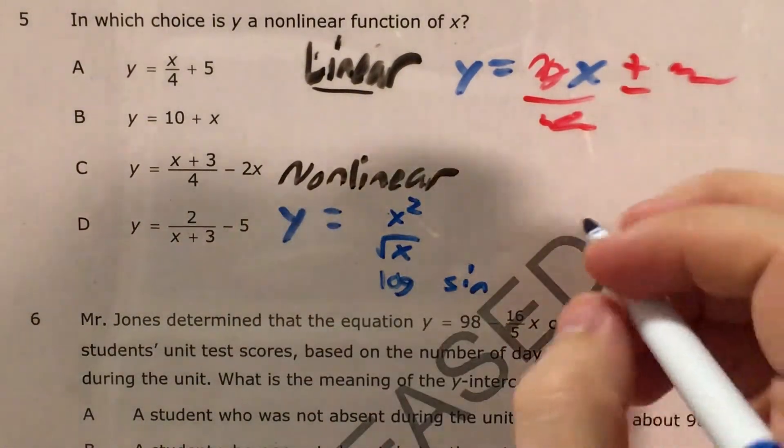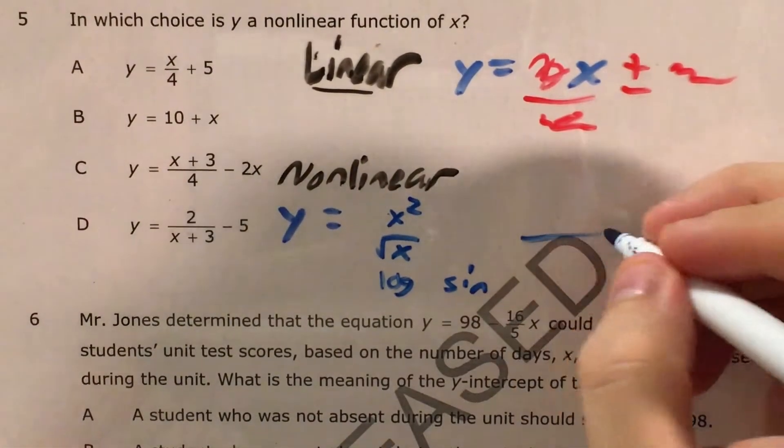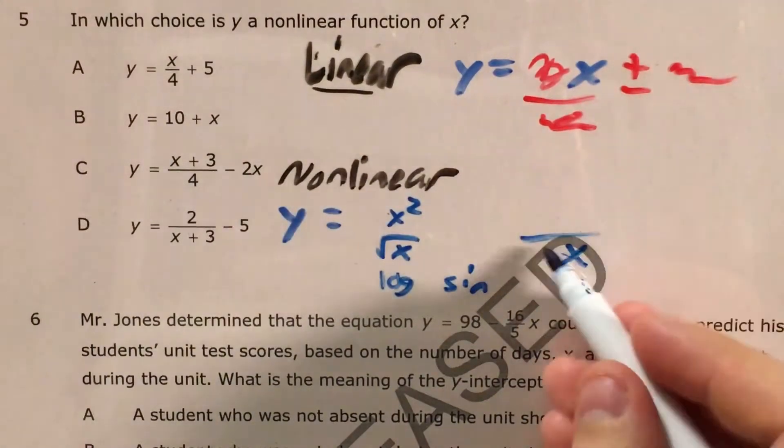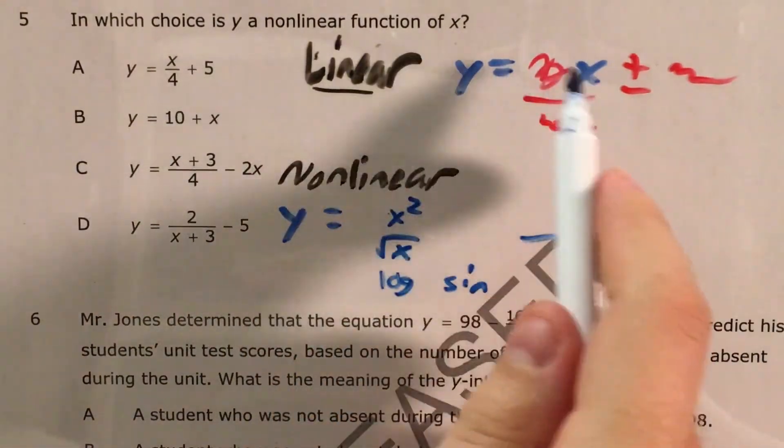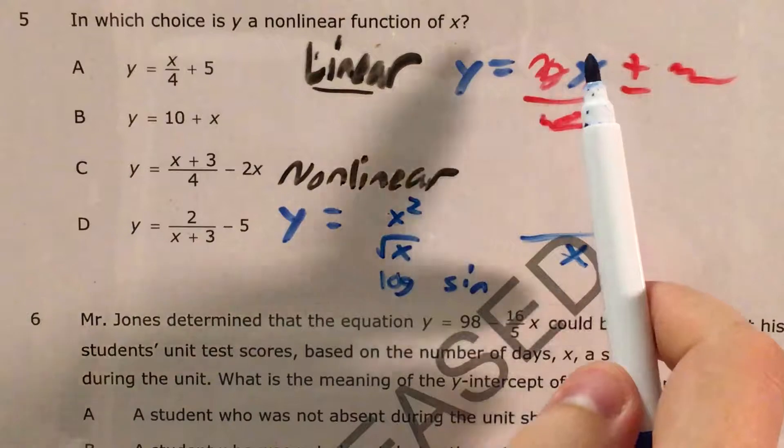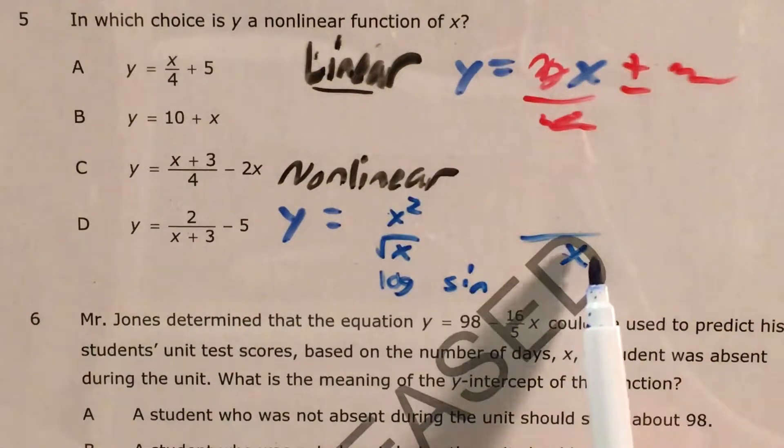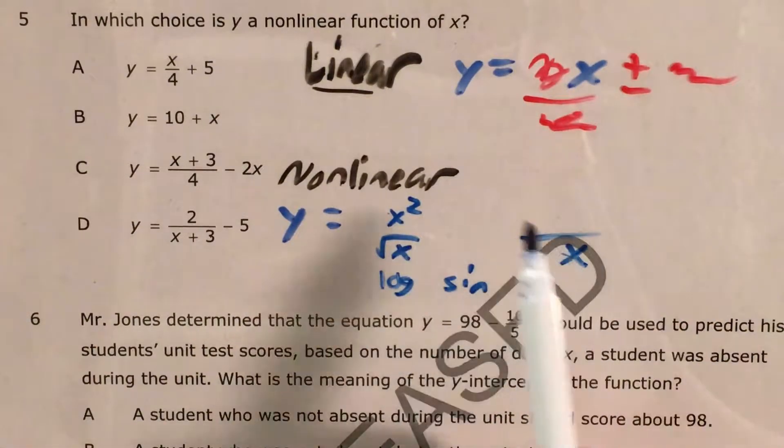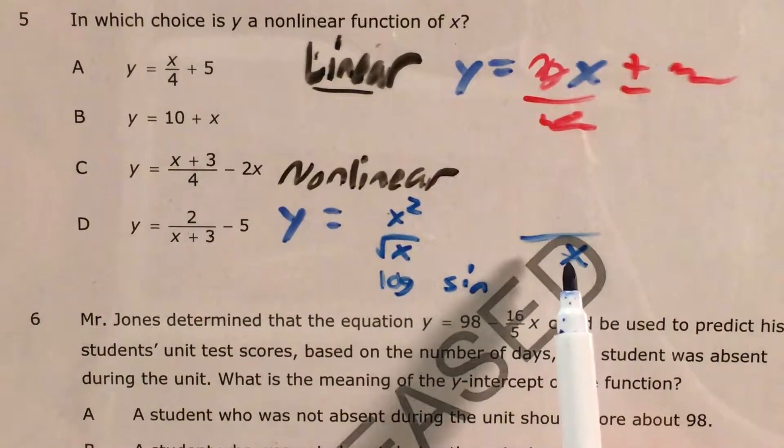But the last one, we could see a fraction where x is on the bottom as opposed to a linear function where x is on the top. So if x is in our numerator, we're fine. But if x shows up in our denominator, then we're nonlinear. And an x in the denominator would even overpower an x in the numerator.